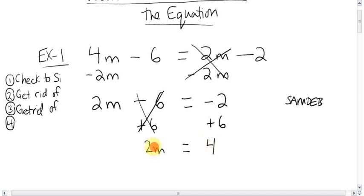And now, let's take it home. 2 times m. The opposite of multiplying is dividing. Same on the other side. The 2's cancel out. m equals 2.